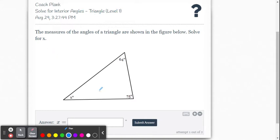So we've learned that the sum of the interior angles for all triangles is always 180 degrees. So we know that x plus 64 plus 75 equals 180.